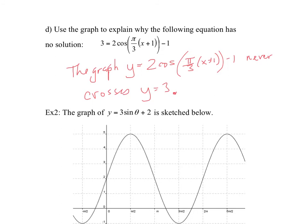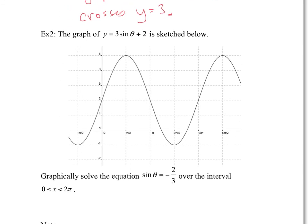Now a slightly different question: I've given you the graph of y = 3sinθ + 2. All we've done to the sine function is stretched it vertically by a factor of 3, so it goes up 3 and down 3, and added 2, making the central axis y = 2. The period is still 2π because we didn't change the value of B, and the graph still starts on the central axis at x = 0.